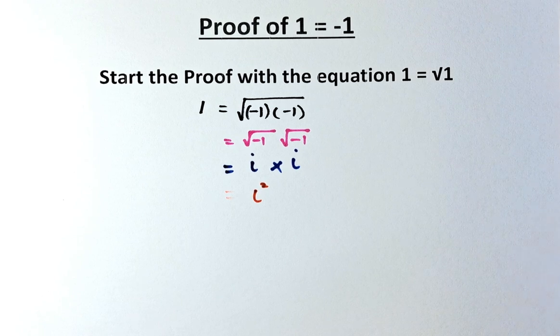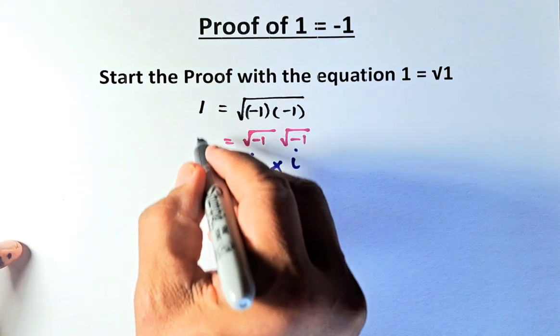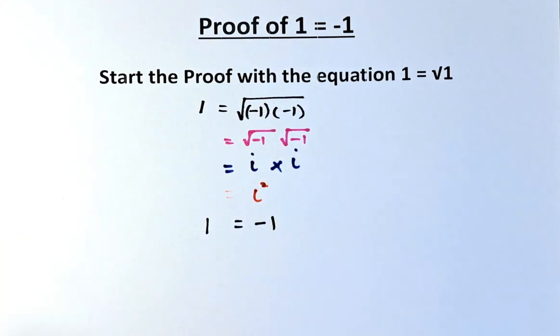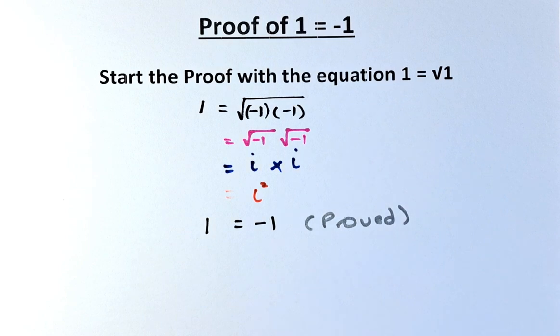If you know your imaginary number, i squared is also the same as negative 1. So now you bring down the 1. So we have proved technically that 1 equals negative 1. So we have proved the equation that 1 equals negative 1.